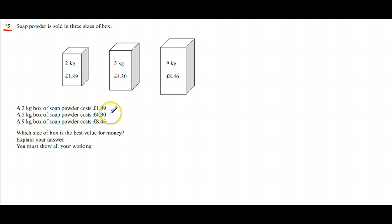Which is the best value for money? There are two approaches you could do: kilograms per pound or pounds per kilogram. It just involves dividing the kilograms by the pounds or the pounds by the kilograms. I'm going to go for pounds per kilogram, so how much each kilogram costs for the three different boxes in order to compare.